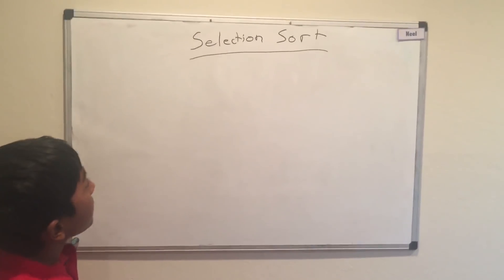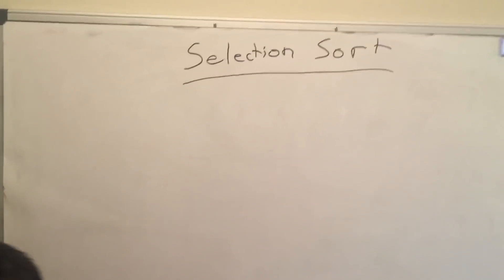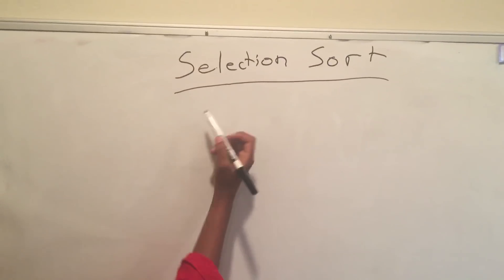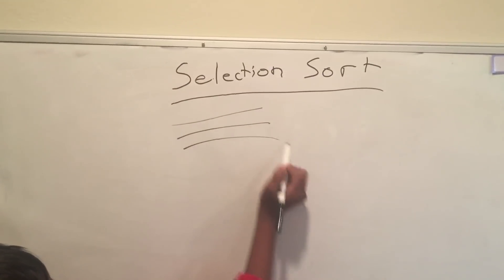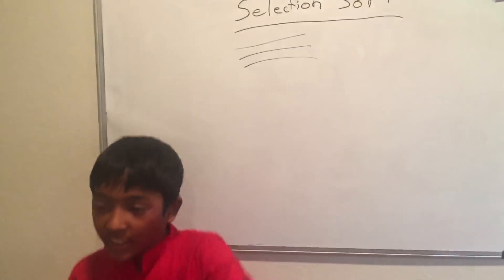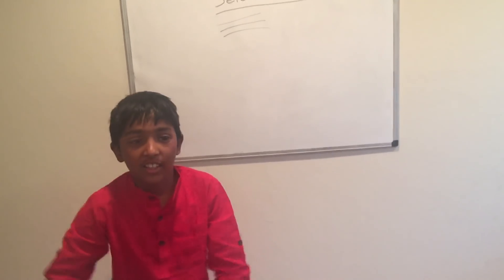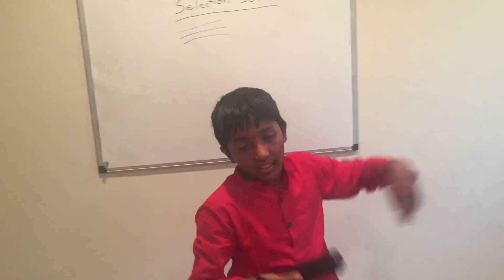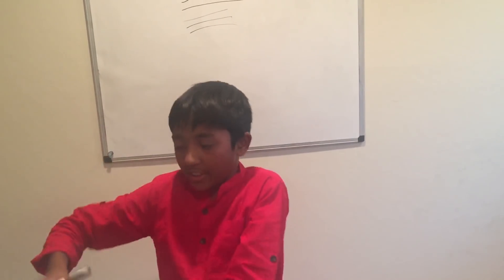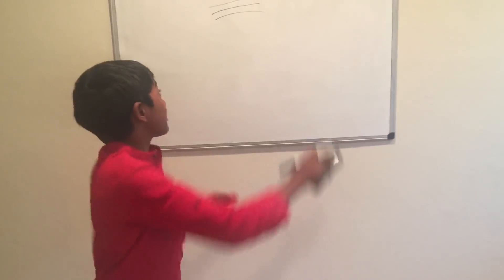So, Selection Sort. One easy way that I've told you in video number one is that you look at this. Selection Sort. Select. You're selecting something from the list, and you're taking it and putting it where it should be. That exactly explains Selection Sort.